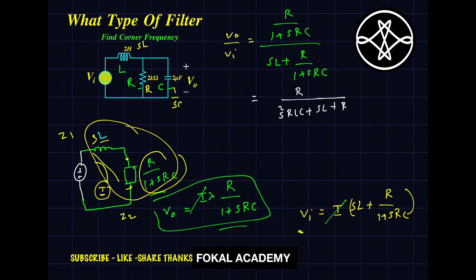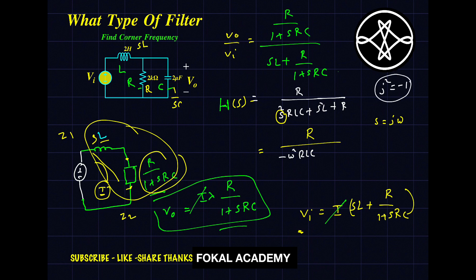By simplifying, we get: H(S) = R / (S²·RLC + SL + R). This is the transfer function. Now substitute S = jω. Here (jω)² = −ω², because j² = −1. So it becomes H(ω) = R / (−ω²·RLC + jωL + R). We have now successfully obtained the transfer function for the given circuit.